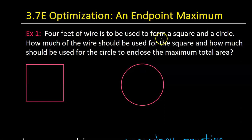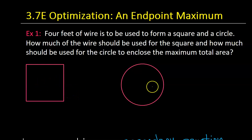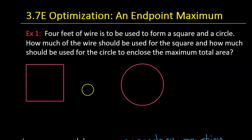Four feet of wire is to be used to form a square and a circle. How much of the wire should be used for the square, and how much should be used for the circle to enclose the maximum total area? The idea is: should we use two feet for the square and two feet for the circle, or three feet for the square and one foot for the circle, or what?